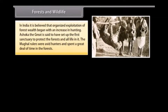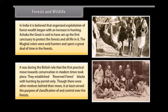In India, it is believed that organized exploitation of forest wealth began with an increase in hunting. Ashoka the Great is said to have set up the first sanctuary to protect the forests and all life in it. The Mughal rulers were avid hunters and spent a great deal of time in the forests. It was during British rule that the first practical move towards conservation in modern times took place — they established reserved forest blocks with hunting by permit only, which served the purpose of classification and control over the forests.